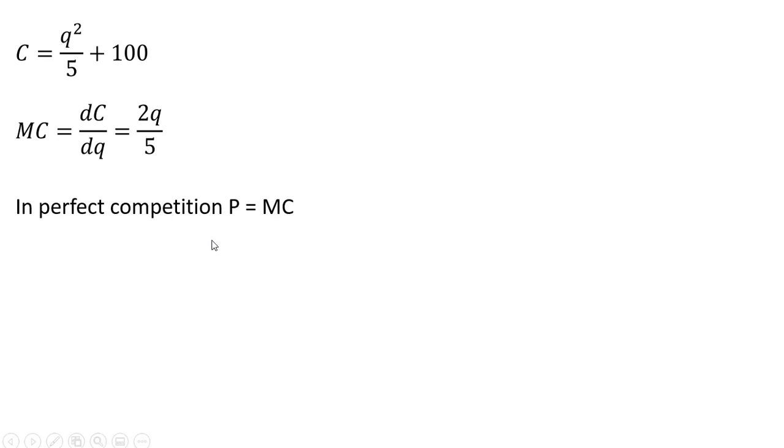Next thing is that in perfect competition, price equals marginal cost. So I'm going to replace MC with P. And now we're going to solve this for Q, and that is the individual firm's supply equation. Q equals 2.5P.